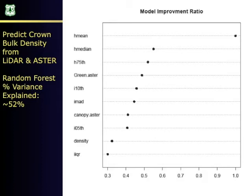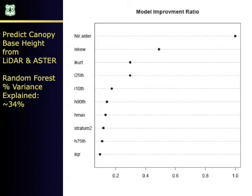Median height is another big predictor, highly correlated to mean height, followed by 75th percentile height. There are also a couple of ASTER variables — including the green-red index — plus a couple of intensity variables and density metrics. For canopy base height, the number one variable is again an ASTER variable, which surprised me. But then everything else is LiDAR: skewness and kurtosis of unnormalized intensity values, lower intensity metrics, and then 90th and 100th percentile of height.